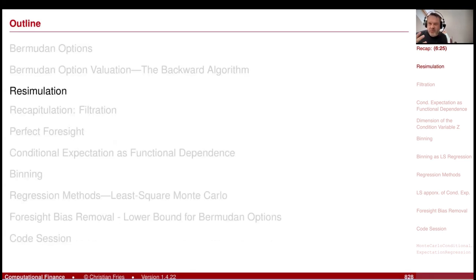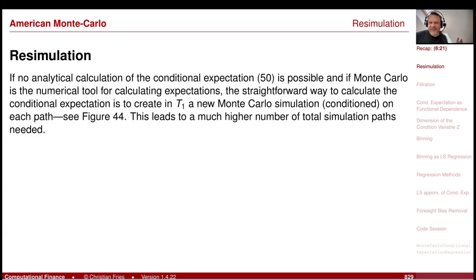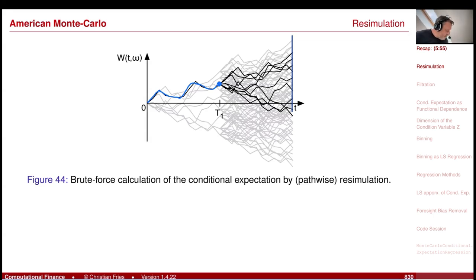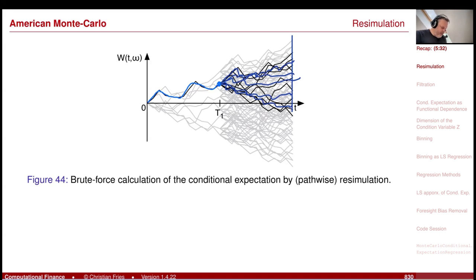We already understood the problem by looking at one unfeasible method: performing a re-simulation. With your Monte Carlo sample path you arrive at a point, and now you would like to have the conditional expectation of the values observed at time t2, conditional on what has happened up to time t1. This requires an additional Monte Carlo simulation originating from that condition point, and you see there is some curse of dimensionality.